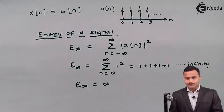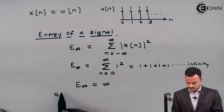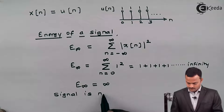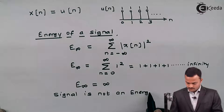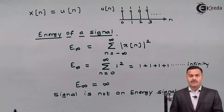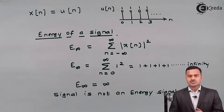E∞ is infinity, which implies the signal is not an energy signal. We have eliminated the possibility of this signal being an energy signal. Now we need to check for power.